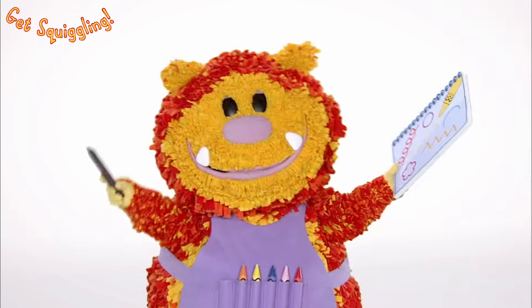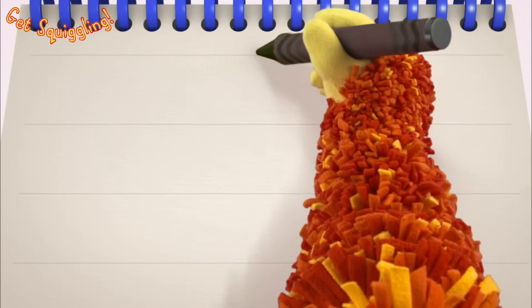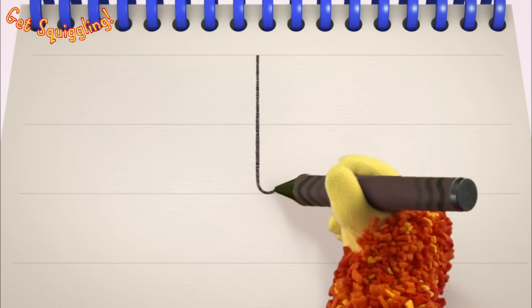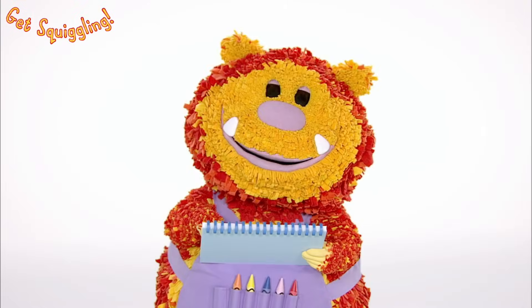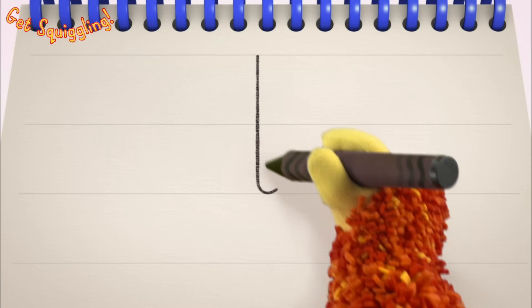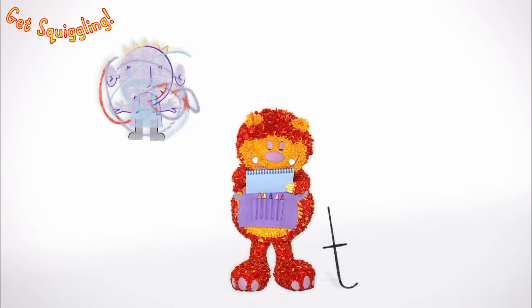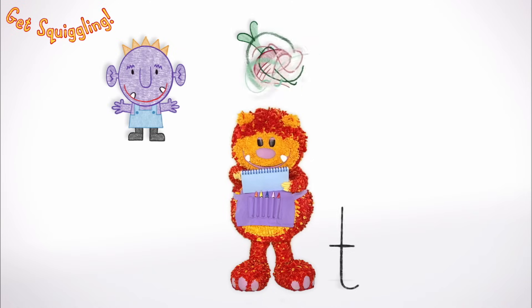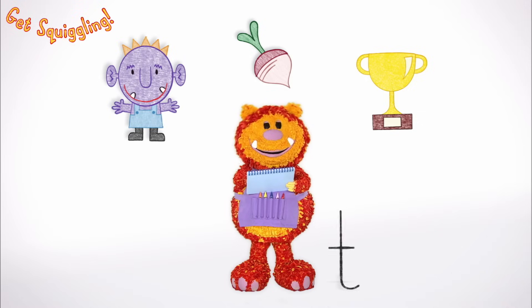Have you got your squiggle pads and squiggle sticks ready? Let's get squiggling! Holding your squiggle stick like this, move it down and flick and across — the letter T. Let's squiggle it again: move it down and flick and across — the letter T. Shall we squiggle some things that start with the letter T? A troll, a turnip and a trophy — they all begin with the letter T.